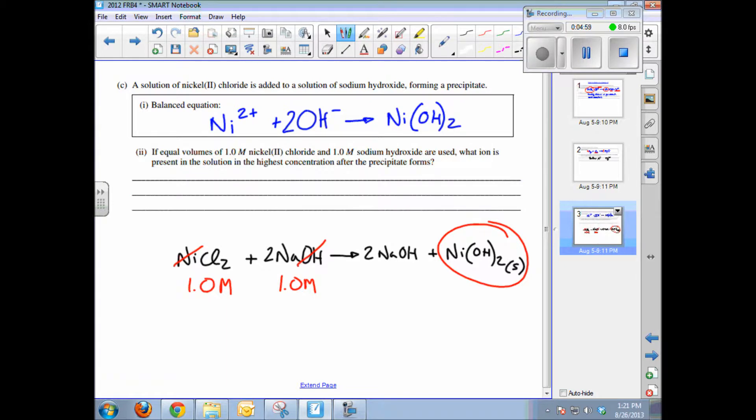But what is left behind is we've got 1.0 molar solution of Na plus from the spectator ion in the sodium hydroxide. But notice the chloride: you've got two moles of Cl minus for every nickel chloride molecule, so you've got two times 1.0 molar, or a 2.0 molar solution of chloride ion left behind. That's one of the spectator ions.